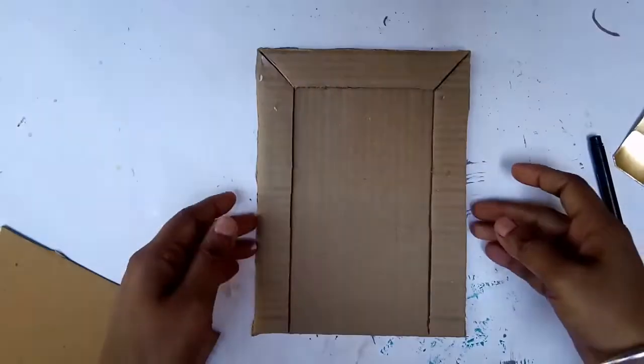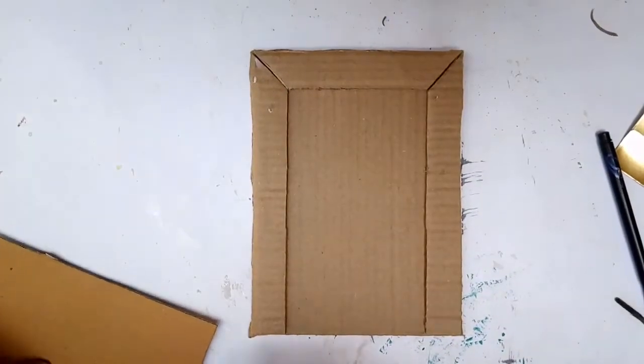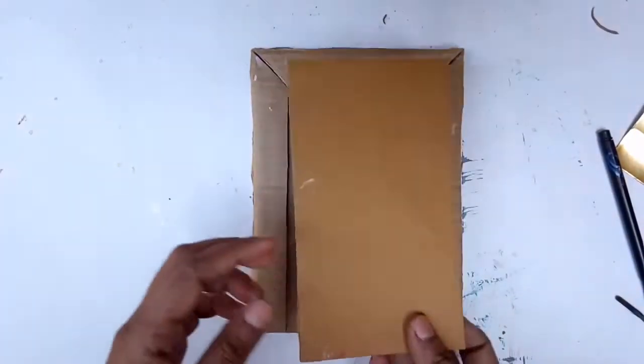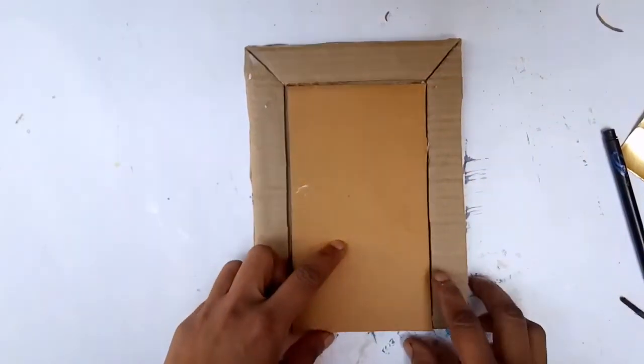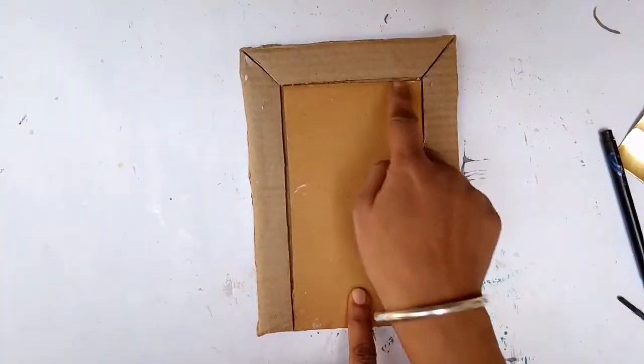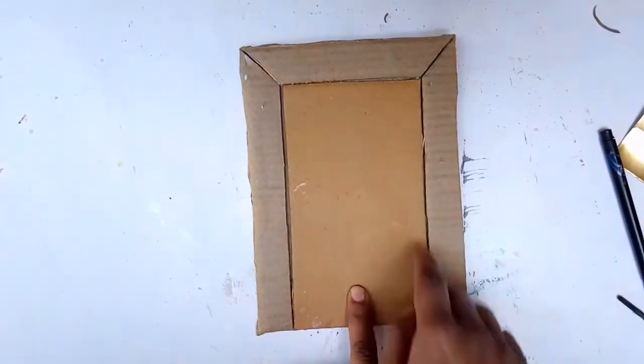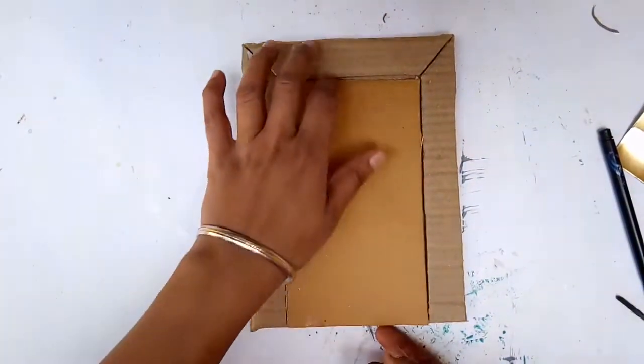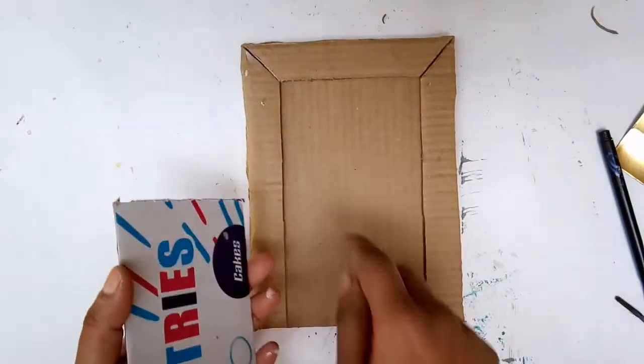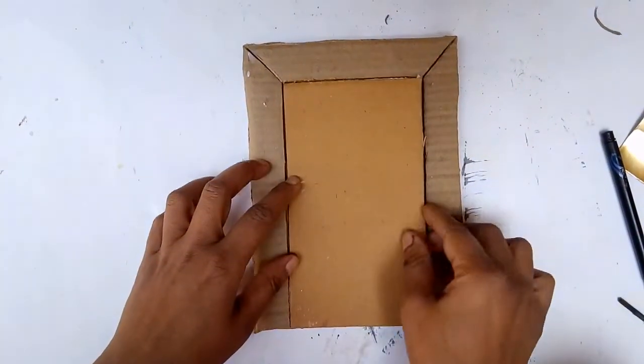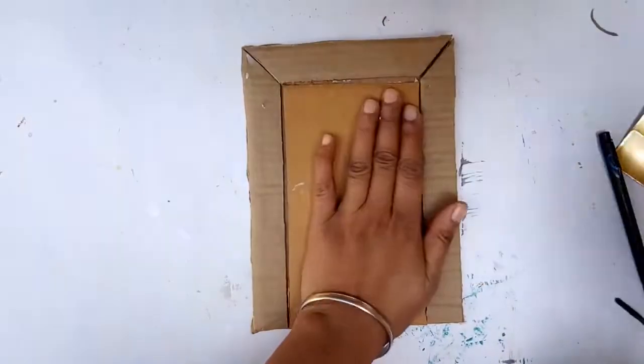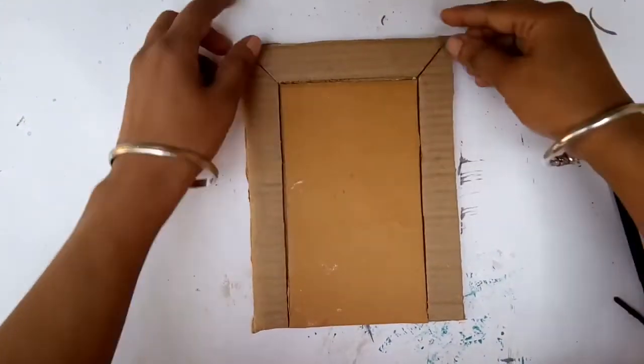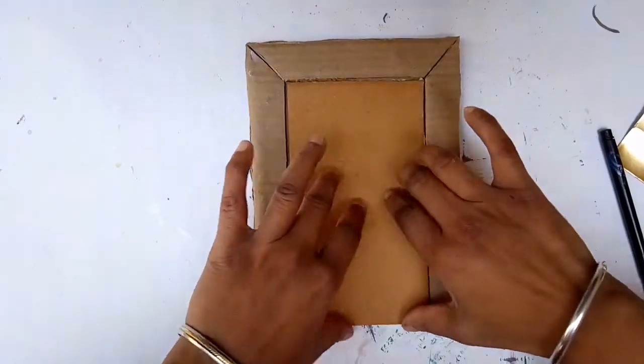We have the frame of the door ready. Now for the door I've taken another piece of cardboard, a different color shade than the frame so that it looks distinct. I have cut it to a size that fits inside this frame. Again I'm going to glue this here with some PVA glue, and I've glued it right in. This way the door structure is ready.